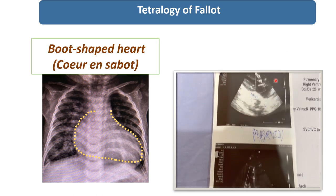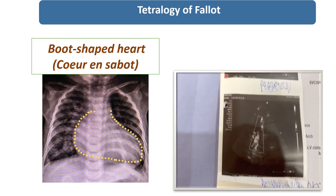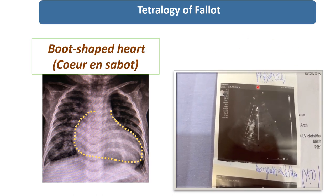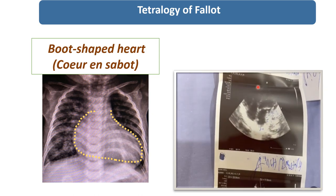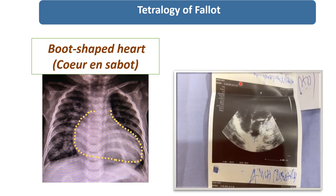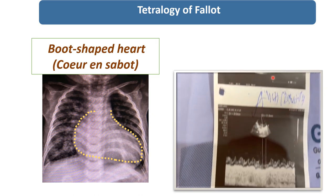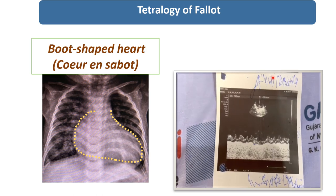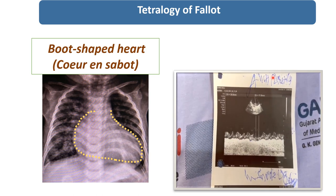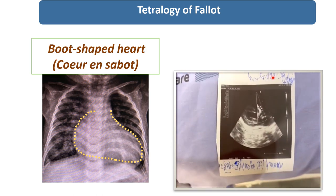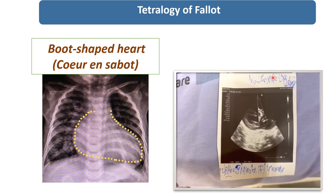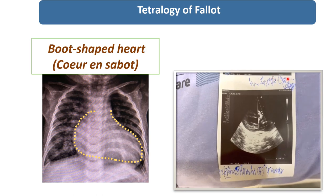All four components of tetralogy of pellets were present on ECG, but patient is having only mild PS. That is why patient was labeled as pink pellets, not having any cyanosis because of mild pulmonary stenosis.